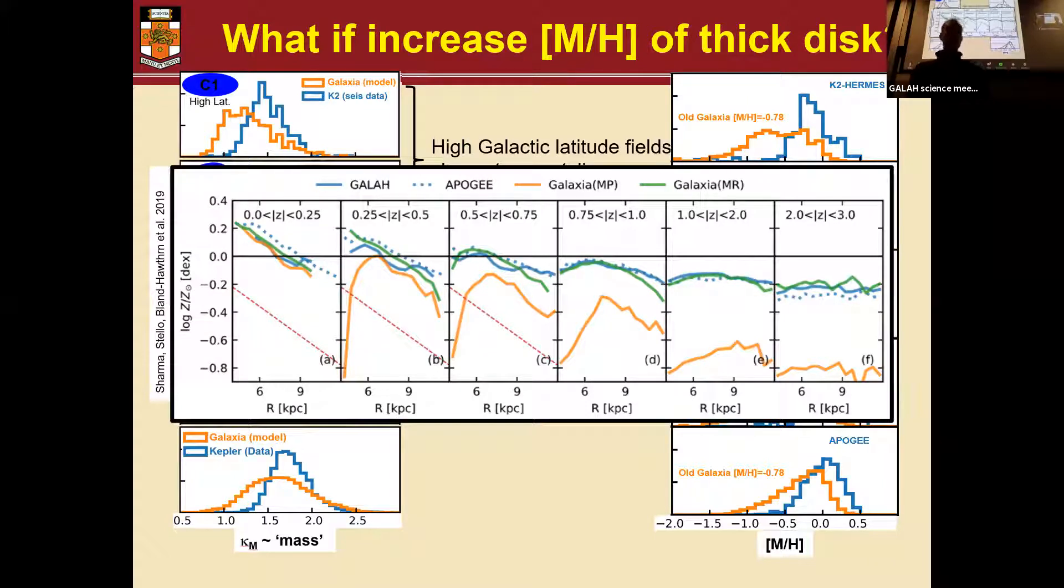However, we can see the old Galaxia model, which is the one we couldn't match with the K2 data, does very poorly when we go high up towards the thick disc in the model. And so what Sanjib did was just to dial a single knob, which was the metallicity of the thick disc, to make it match with the data, which is what we call the new Galaxia model in green, as you can see, matching the data.